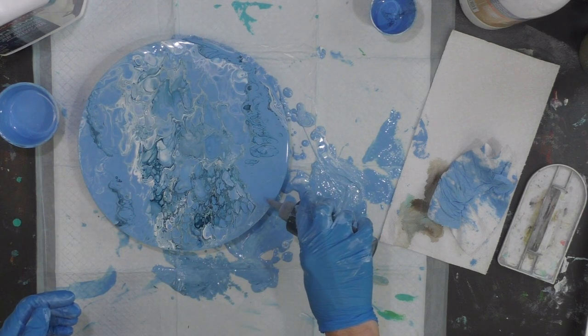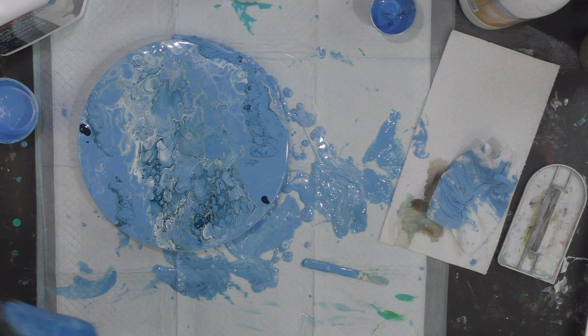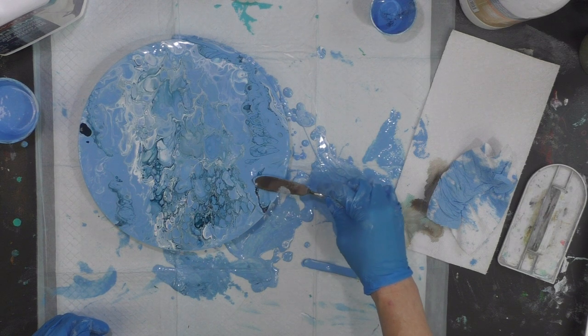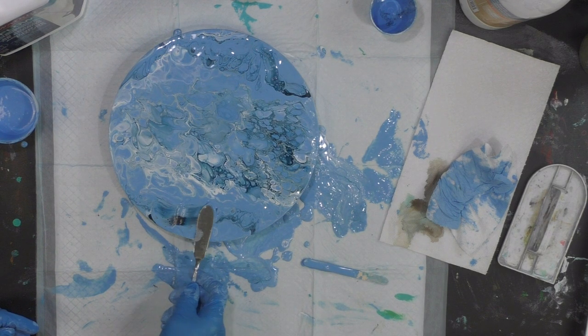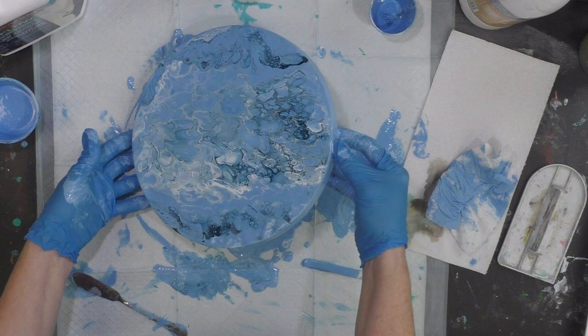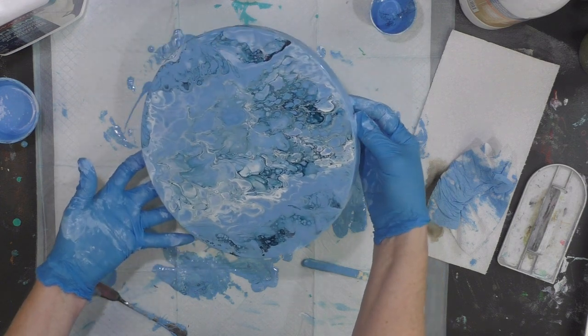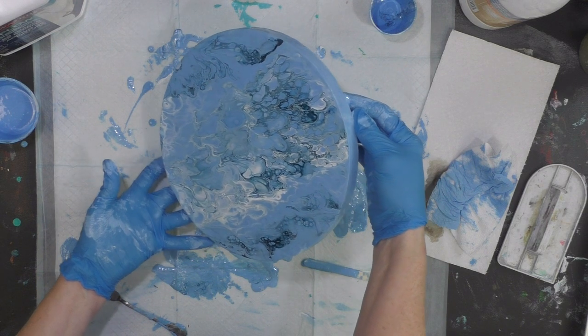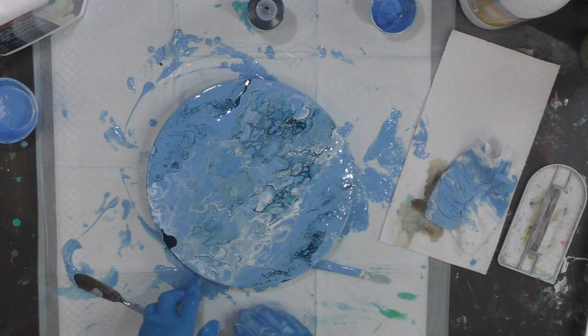Maybe what I'll do is put a little navy here and here. Take my butter knife, just kind of swish it a little bit. Come up through here and swish it, maybe through here a little bit. That brings out those cells, and then you can stretch them a little bit.